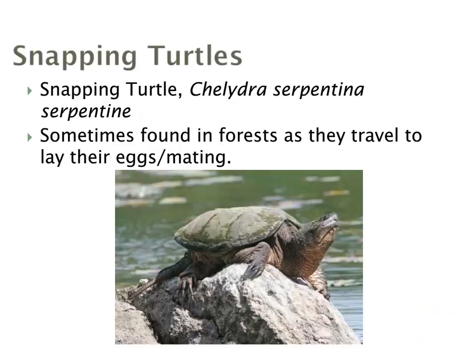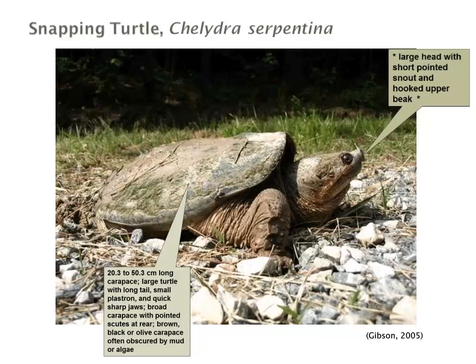One of the more recognizable species is, of course, the snapping turtle. They lay their eggs in various overburdens along roadsides, ditches, and gravel roads. We'll find a lot of movement around spring and also in the fall. They can be found in forests where they travel to lay their eggs and also to mate. The snapping turtle is the largest freshwater turtle in Canada and can be quite large — between 20 to 50 centimetres long in terms of carapace.